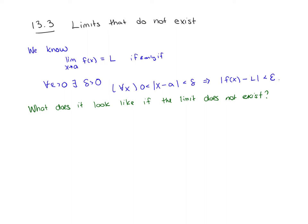We've seen before what it means to have a limit equal some value. In particular, we know that the limit as x goes to A of f of x equals L if and only if for every epsilon greater than 0 there exists a delta greater than 0 such that for all x, where the distance between x and A is between 0 and delta, then the absolute value of f of x minus L is less than epsilon.